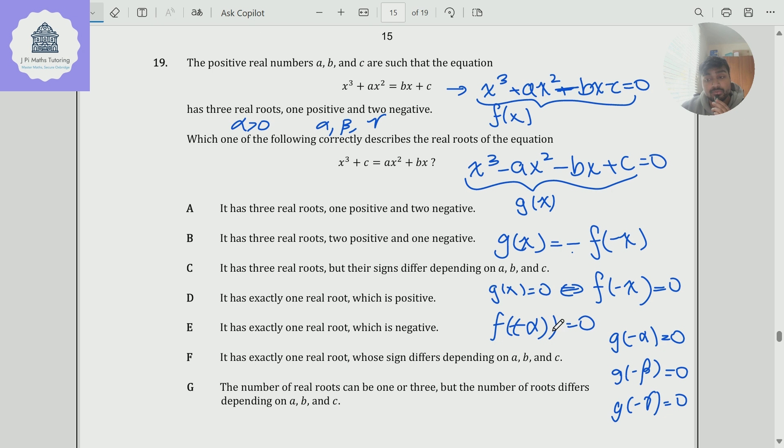One is minus alpha, which will be a negative number. And the other two are minus beta and minus gamma, which will be positive. And so it has three real roots, one negative, two positive. And so the answer therefore is E.